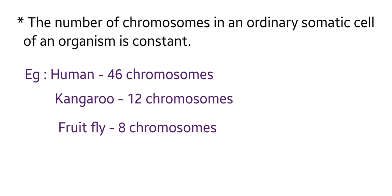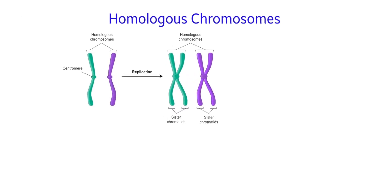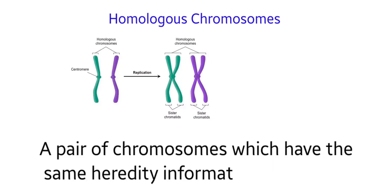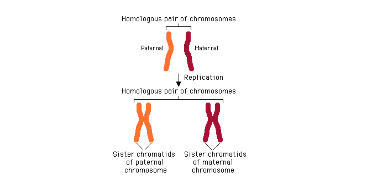For example, there are 46 chromosomes or 23 pairs of chromosomes in a chromosomal set of human somatic cells. A pair of chromosomes which contain the same hereditary information is called a homologous pair of chromosomes.